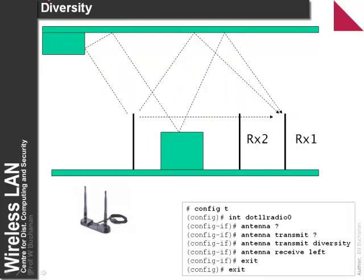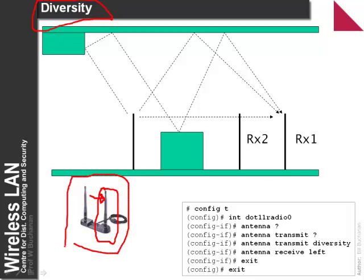We can overcome the null spot problem with diversity — placing an antenna a small distance away from the null path typically produces a reasonable signal. Cisco access points have two antennas and select the one with the best receiving strength. We can configure this in the radio interface — either enabling diversity so it picks the best antenna, or manually selecting left or right.